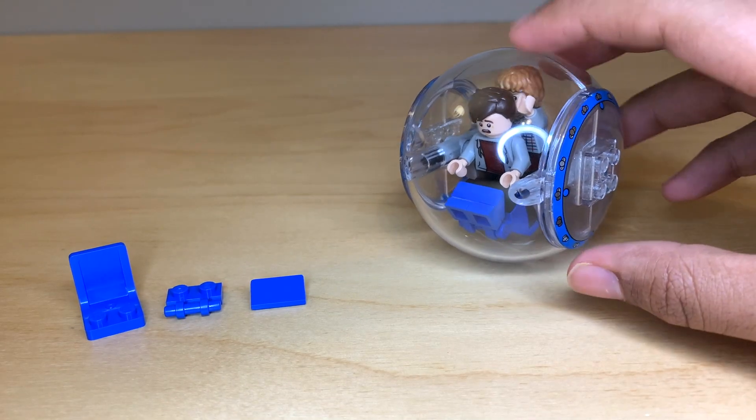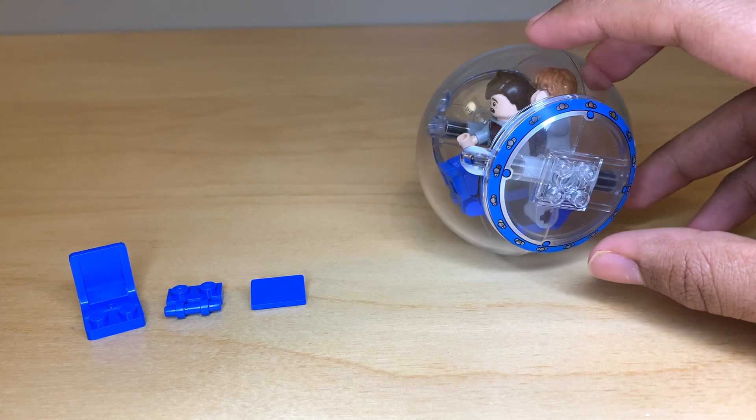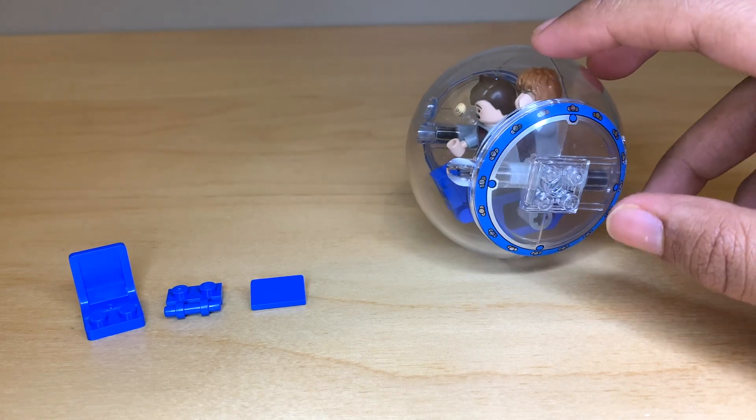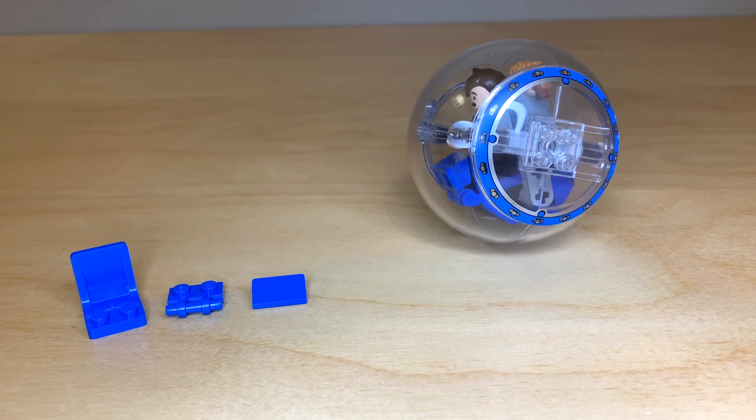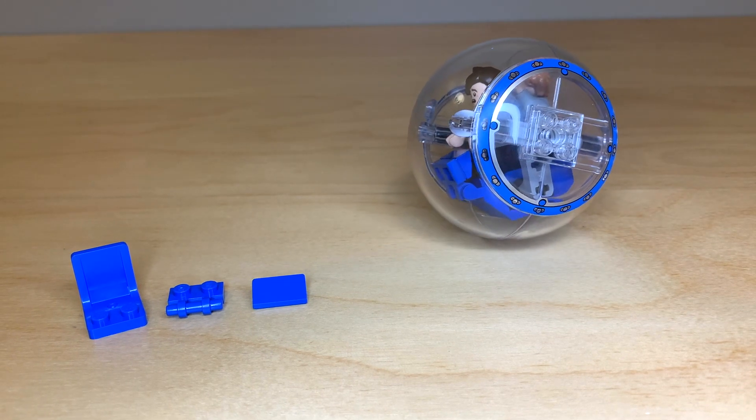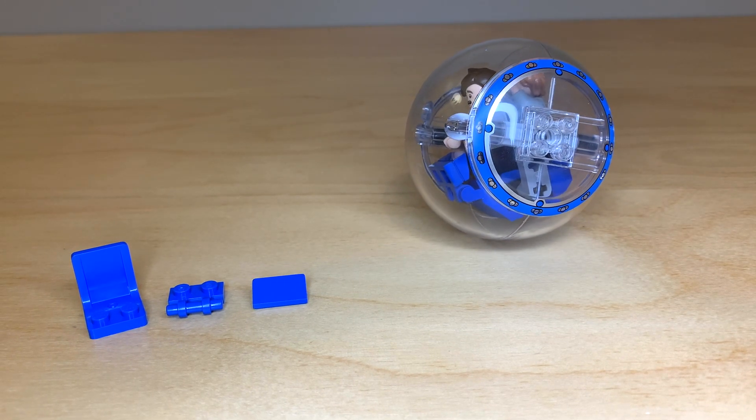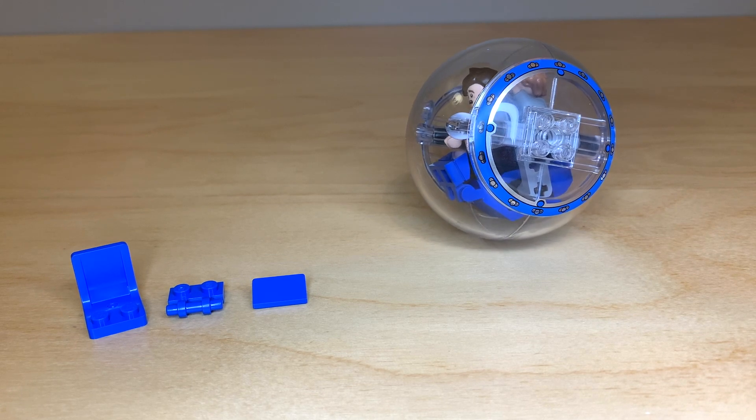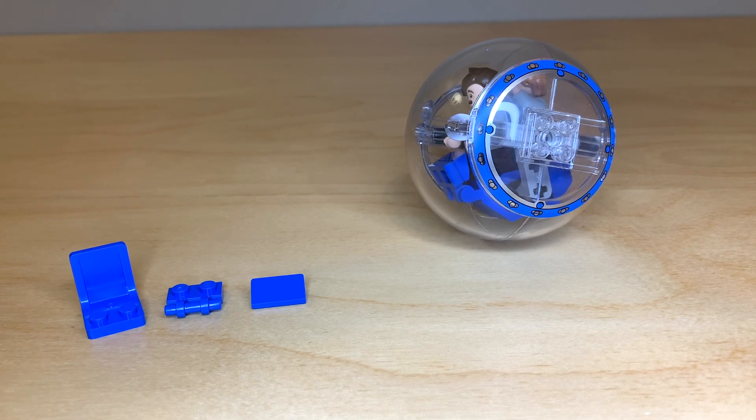All right, well, that pretty much does it for this video. I hope that this taught you guys something new. I hope that you guys are going to be able to fit more minifigures in your gyrospheres if that's what you want. Let me know in the comments if you found any other ways to fit multiple figures in there. Or if you have any other ideas for Jurassic World modifications.